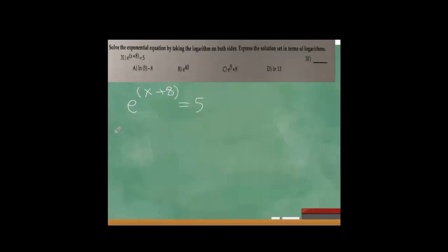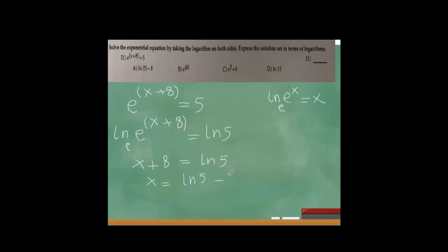Solve the exponential equation by taking the logarithm on both sides. We have e to the power of (x plus 8) equals 5. Taking the natural log of both sides and using the property that natural log of e to the power of x equals x, the left side simplifies to x plus 8 equals natural log of 5. Subtracting 8 from both sides gives x equals natural log of 5 minus 8. Answer A is correct.